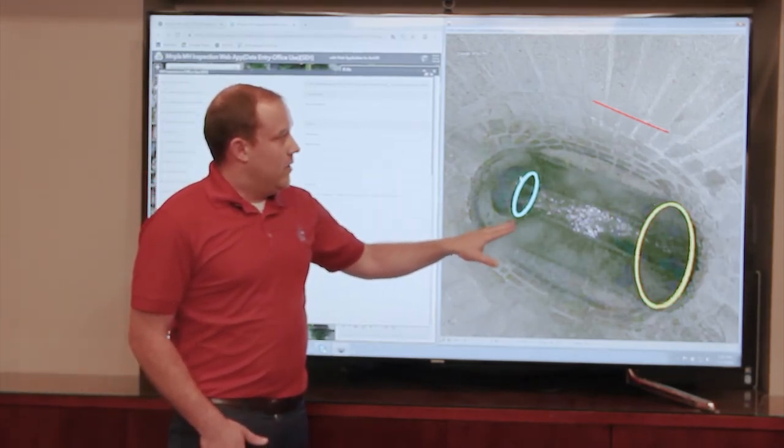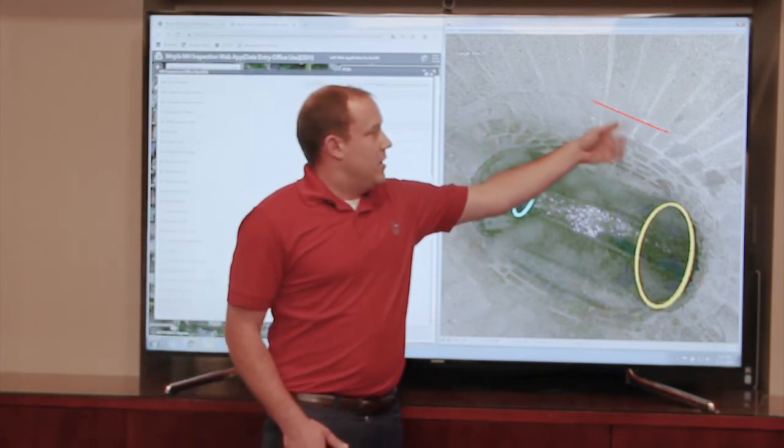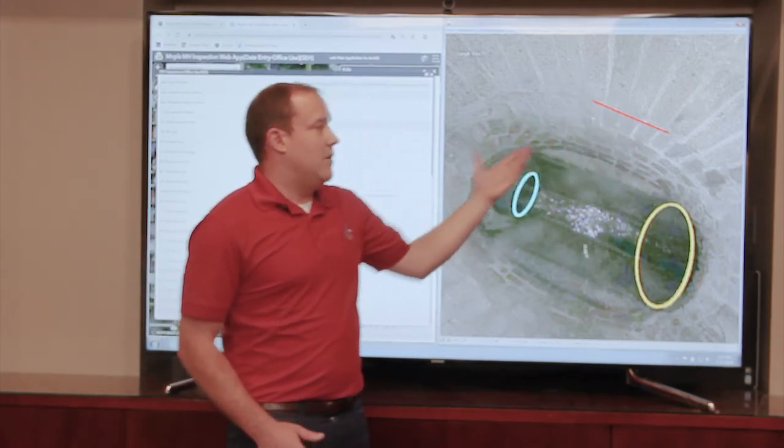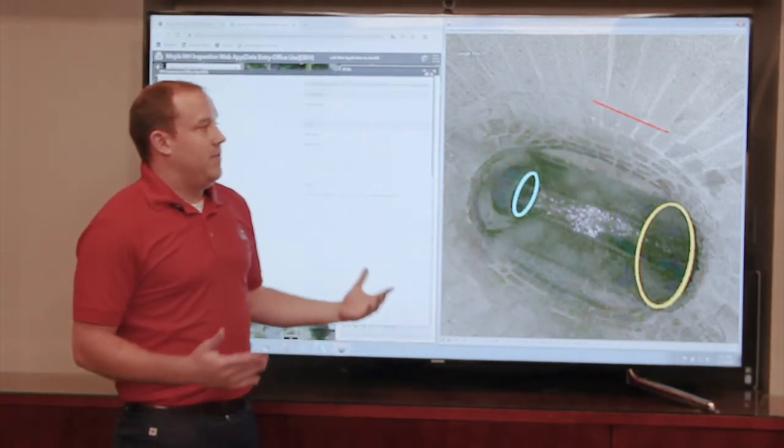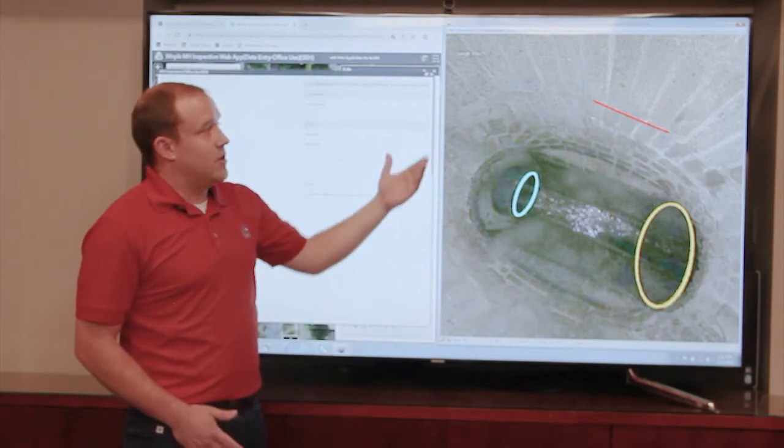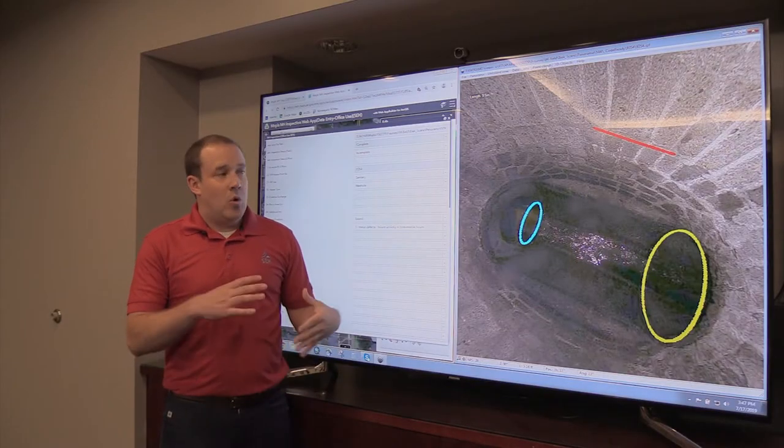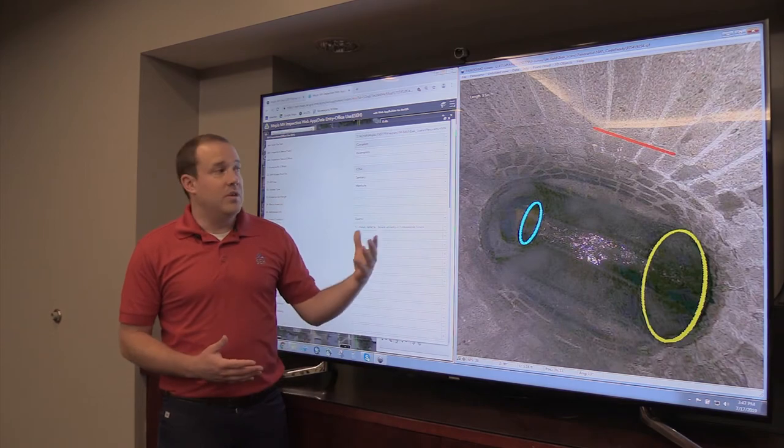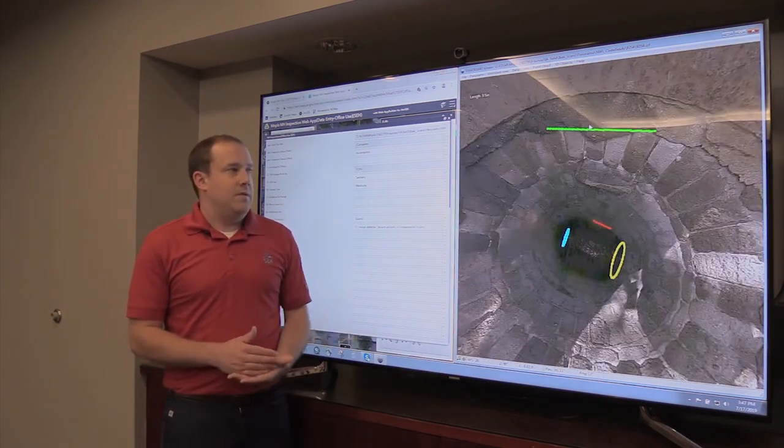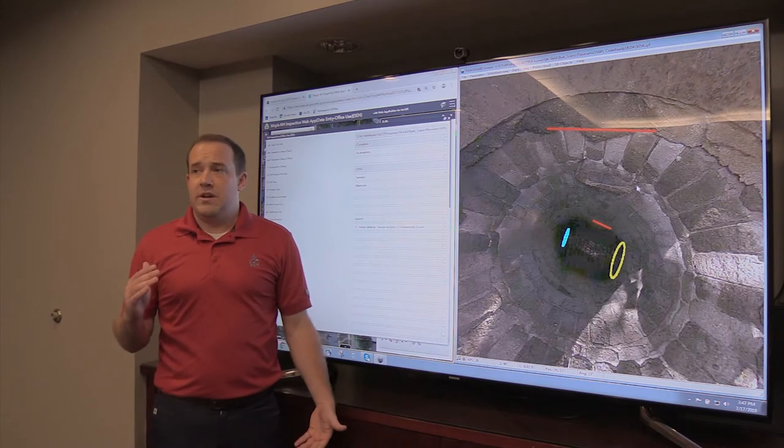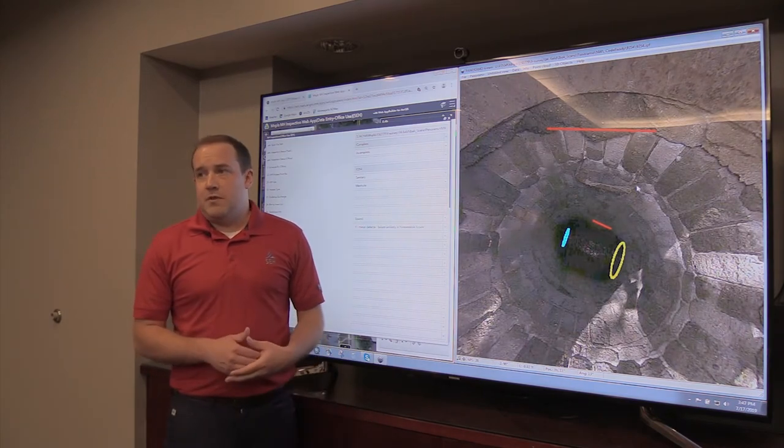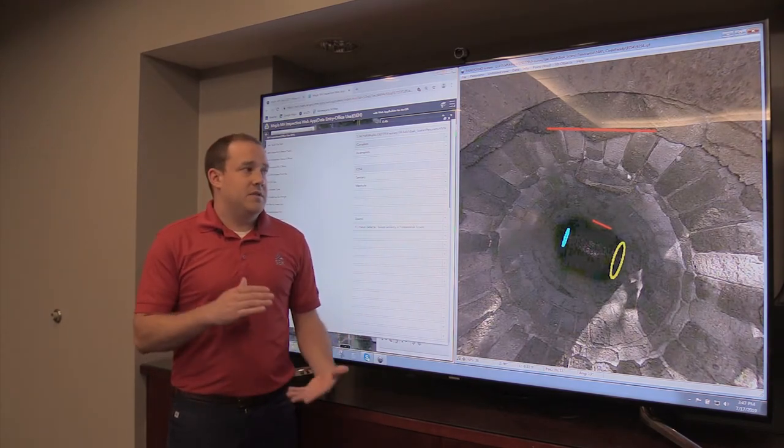Right here what we're looking at is just a general indicator line which allows us to identify different structural components. That's just the transition between the cone portion of the manhole to the wall. If a client is trying to identify different component depths for repair purposes, it gives us that good baseline.